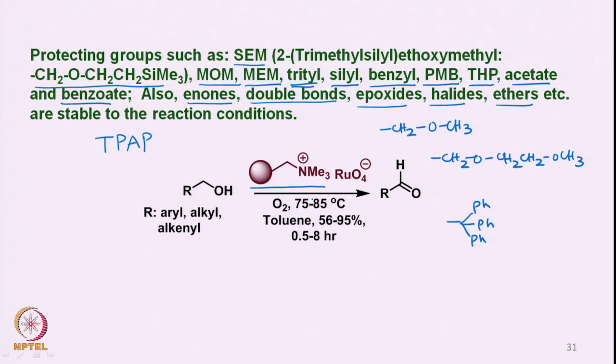The solid-phase ruthenium reagent can be reused for the oxidation of alcohols to the corresponding aldehydes. This concludes the discussion of ruthenium tetroxide-based oxidizing agents and their useful transformations, including the introduction of TPAP as a mild and selective oxidizing agent. We now move to another type of oxidation called the Tamao-Fleming oxidation.